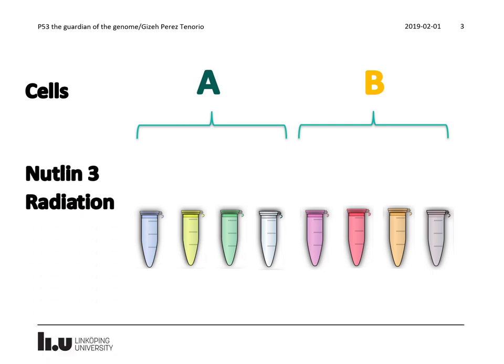We are using two different kinds of treatment: NUTLIN3 and radiation. There are some cells that will not receive any treatment at all. These are the control cells.